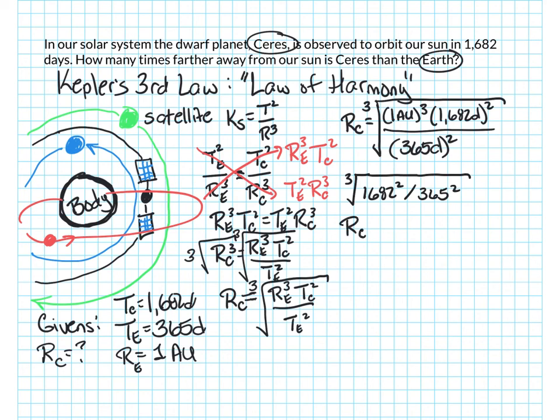So the answer for this is, if we do three sig figs, it'll be 2.77 AUs. And that's right. That's where Ceres can be found. That happens to be the region where we have the asteroid belt. So Ceres is the biggest object in our asteroid belt.